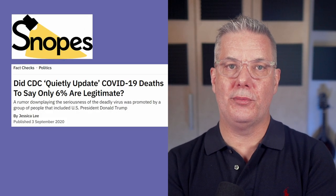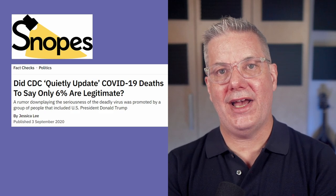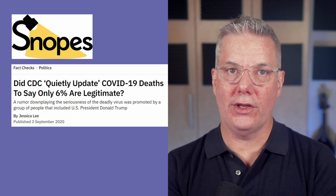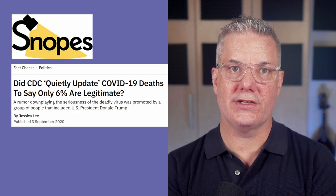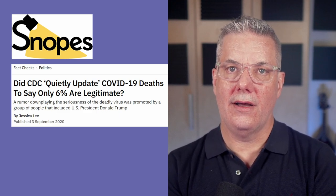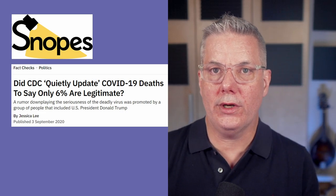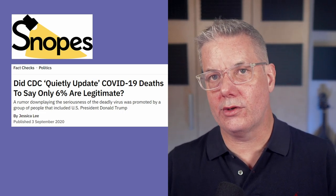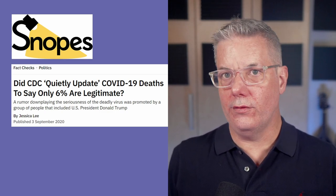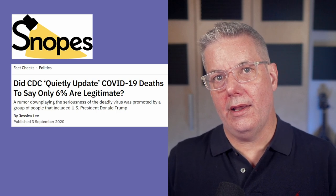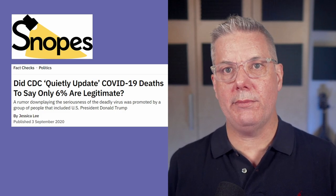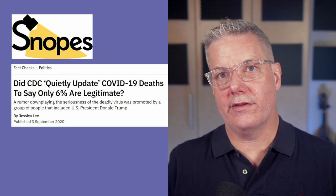There was pushback, and in this case the pushback was from fact checkers who pointed out that no, that is not an appropriate use of those deaths — that's not an appropriate interpretation of that statistic. Pre-existing conditions and other things that people have when they die are recorded because that's how deaths are recorded. They're recorded that way so that people can understand what contributed to deaths. And in the case of people who die from COVID, many of them, like many other people who die from any other cause, have pre-existing conditions.